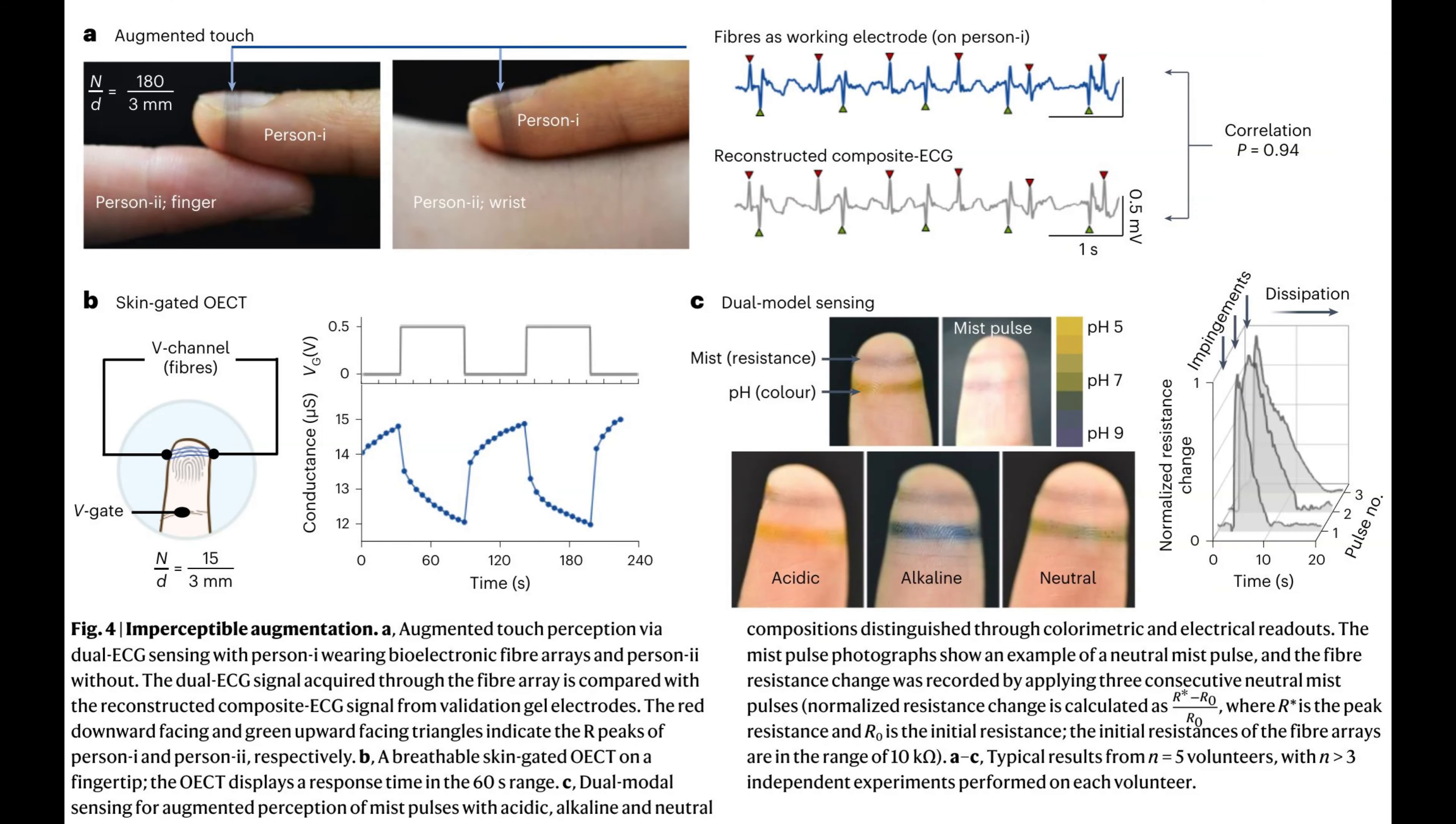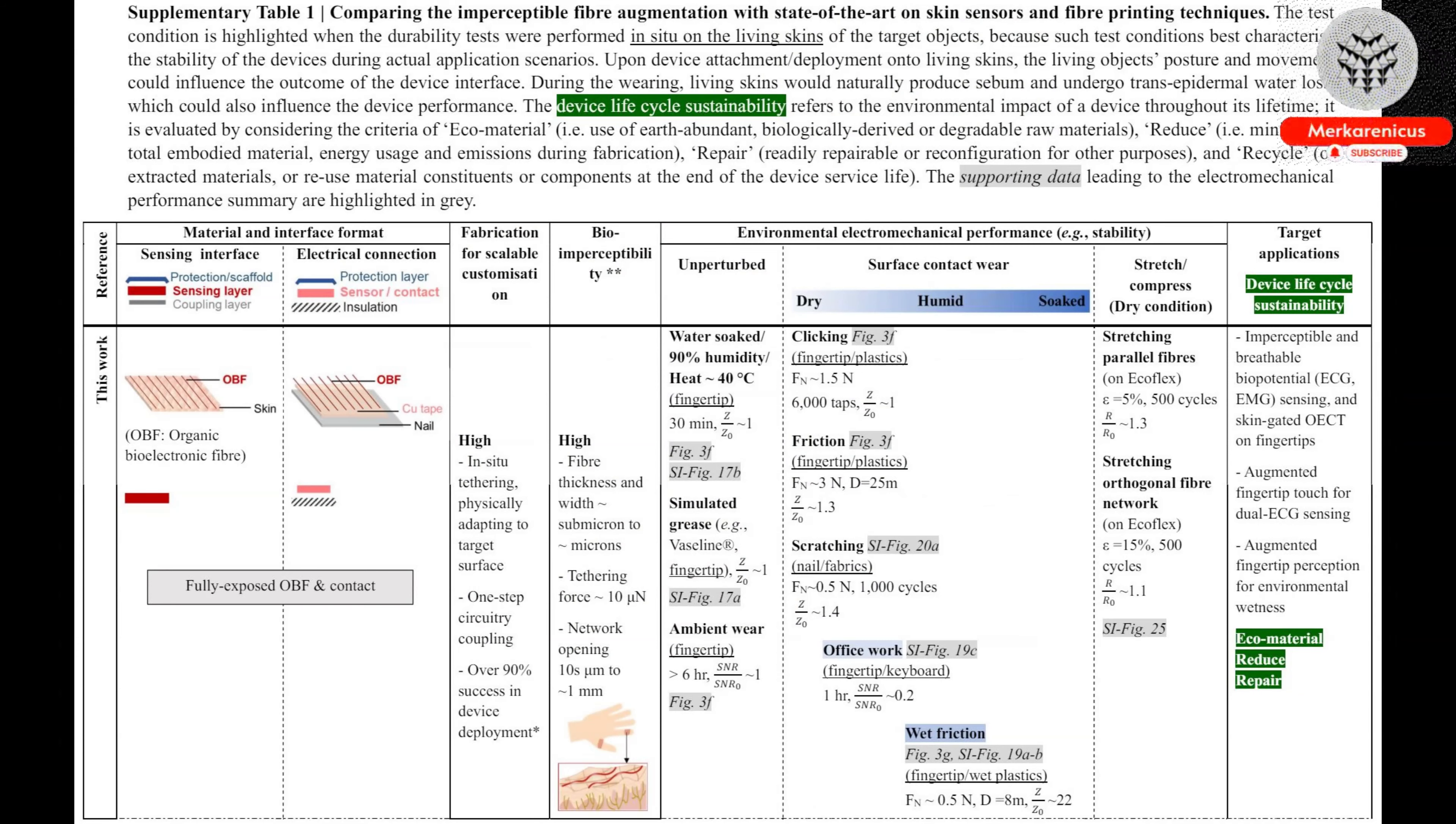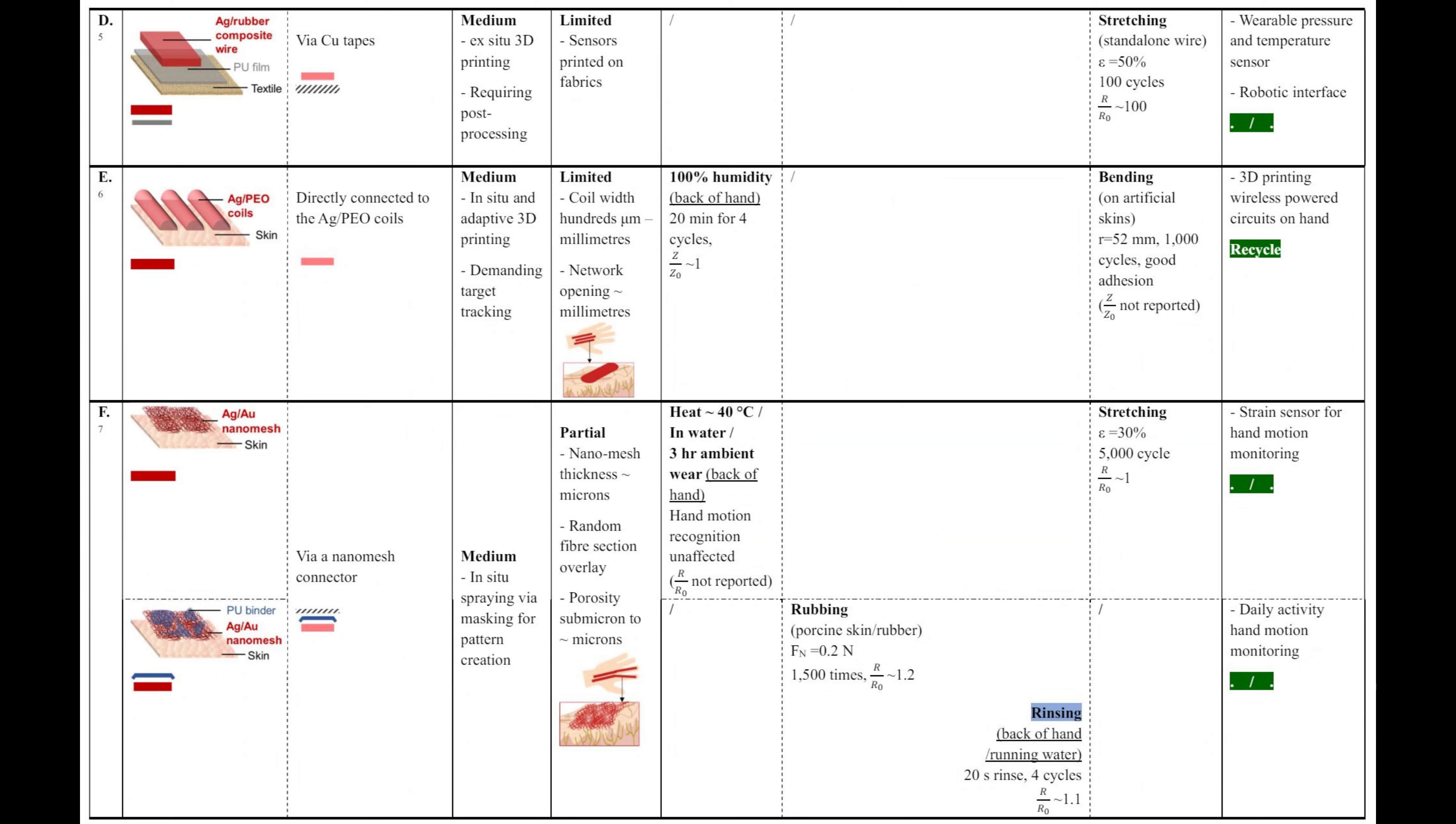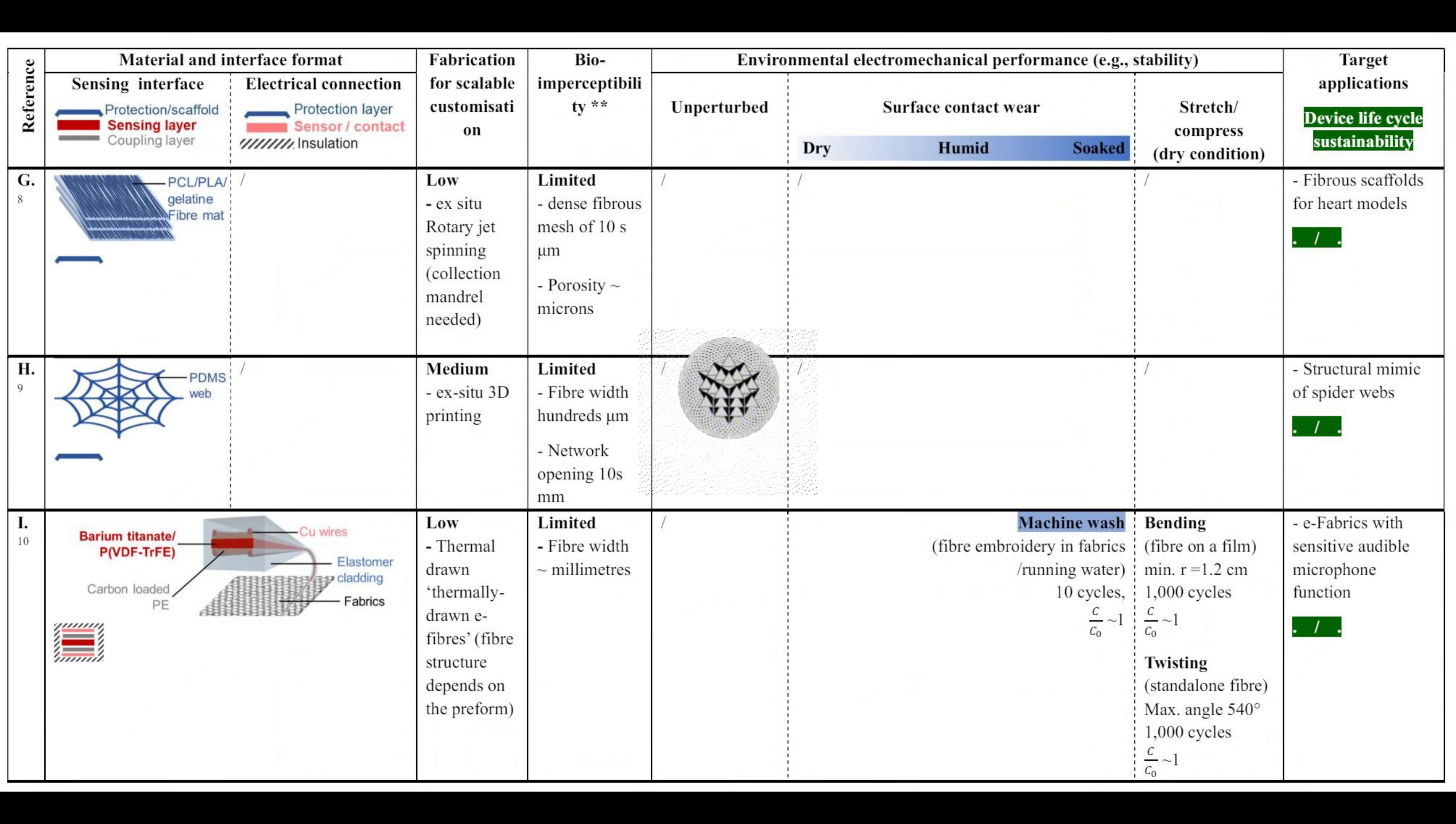The production of high resolution sensors typically takes place in an industrial clean room, involving a complex and resource-intensive fabrication process that utilises toxic chemicals. However, the sensors developed by Cambridge offer a revolutionary alternative. These sensors can be manufactured in any location, eliminating the need for specialised facilities, and they consume only a fraction of the energy compared to conventional sensors.